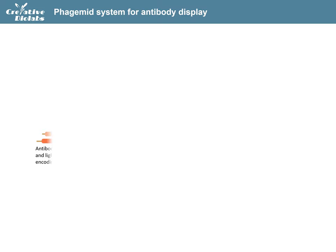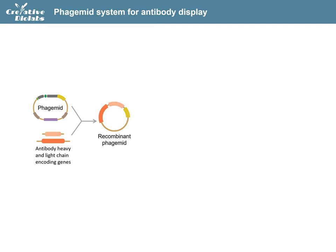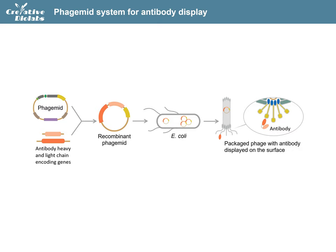A typical workflow of phage display starts with the amplification of heavy and light chain genes of the target antibody and the construction of recombinant phage display plasmids, or phagemids. Once transformed into E. coli, the recombinant plasmids will be replicated, translated, and assembled into infective phages, with the target monoclonal antibody displayed on the surface.